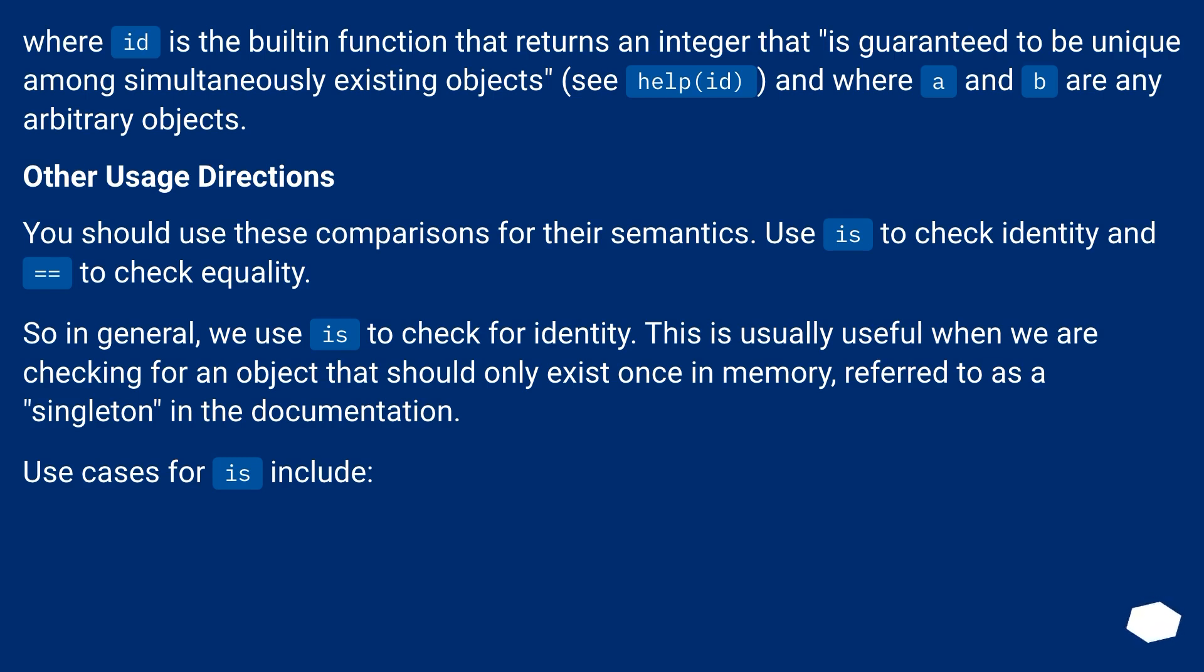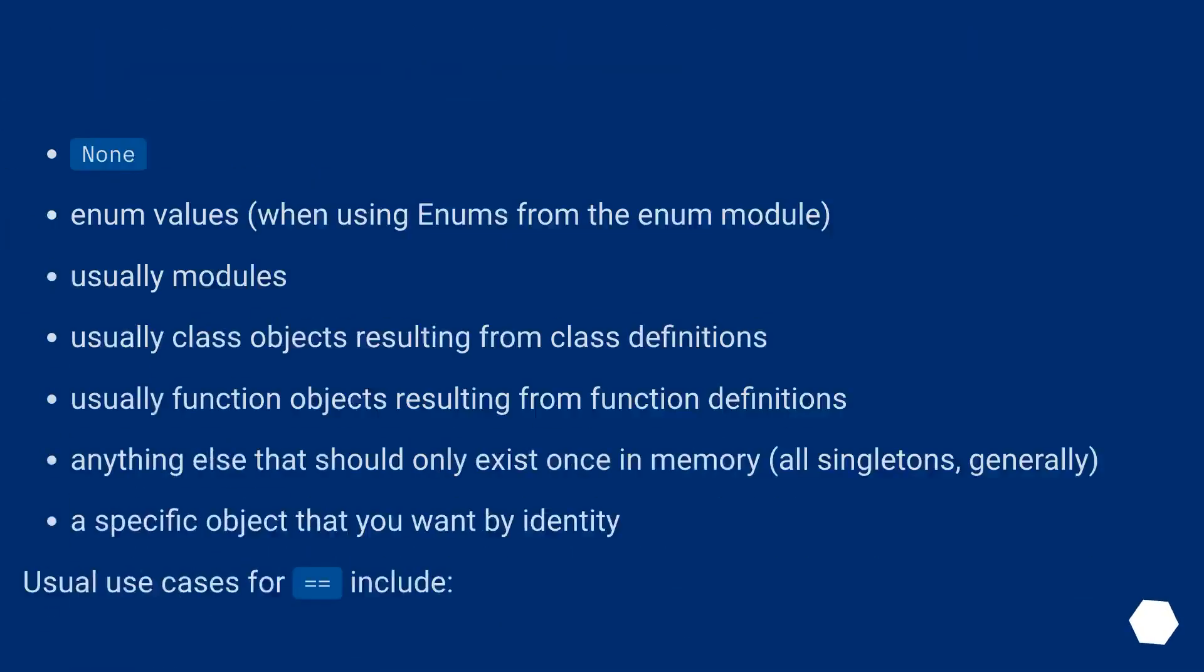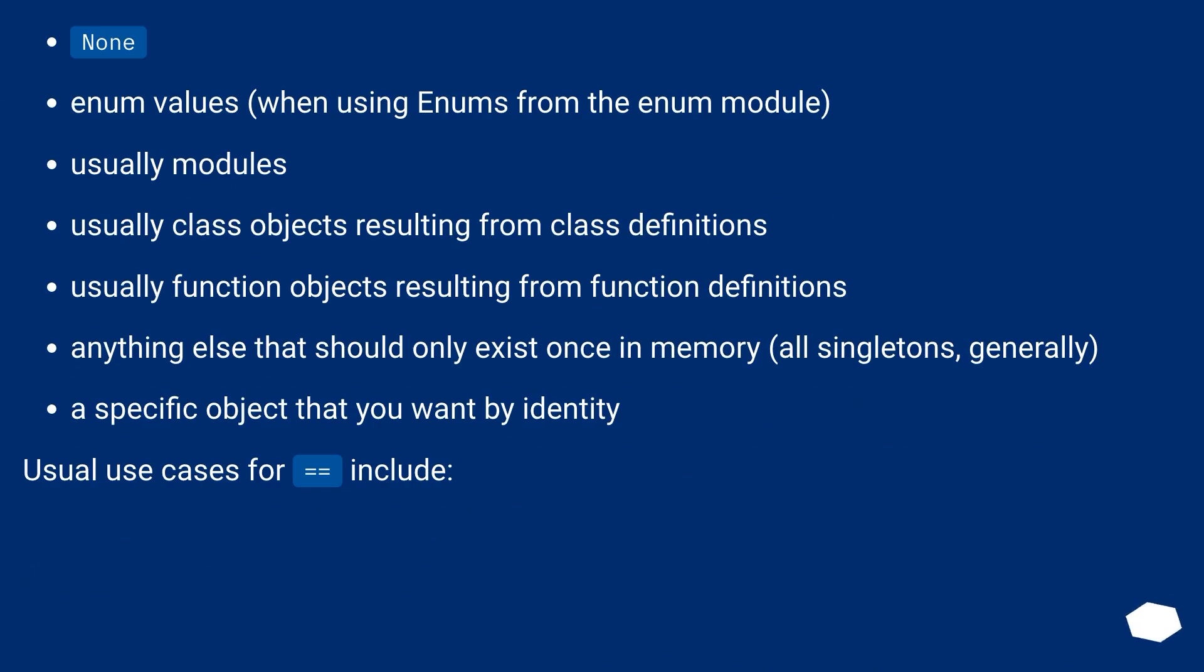Other usage directions. You should use these comparisons for their semantics. Use is to check identity and equals equals to check equality. So in general, we use is to check for identity. This is usually useful when we are checking for an object that should only exist once in memory, referred to as a singleton in the documentation. Use cases for is include None, enum values when using enums from the enum module, class objects resulting from class definitions, function objects resulting from function definitions, anything else that should only exist once in memory, all singletons, generally a specific object that you want by identity.